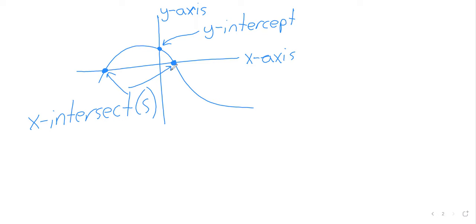In this case, there are two x-intercepts and one y-intercept. And it's pretty normal to just have one y-intercept, but maybe have multiple x-intercepts.